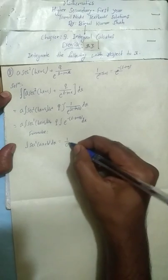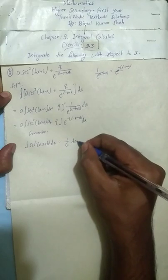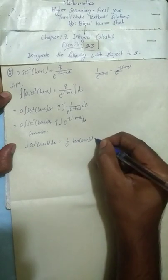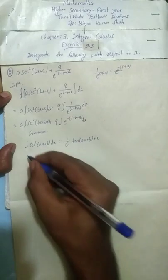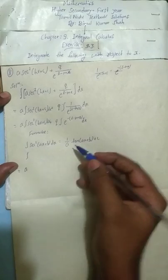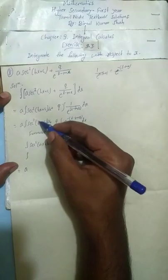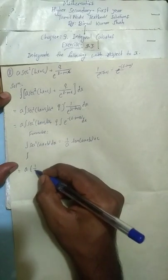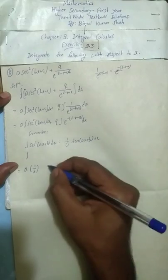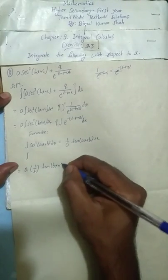For the integral of sec²(ax + b), the result is one by a times tan(ax + b) plus constant. Here the coefficient of x is b, so we write one by b, then tan(bx + c). So the first part gives us a times one by b times tan(bx + c), which we can write as a over b times tan(bx + c).